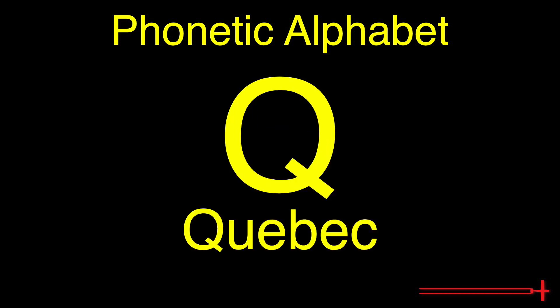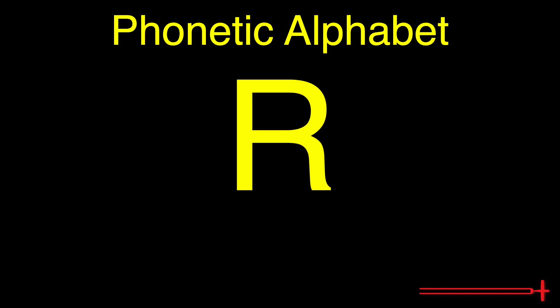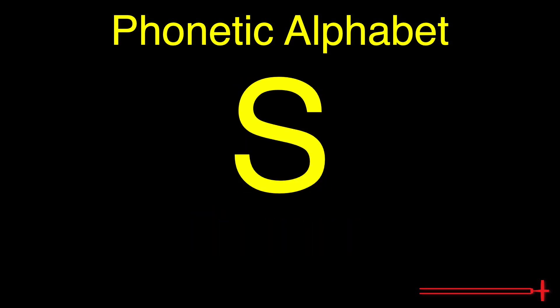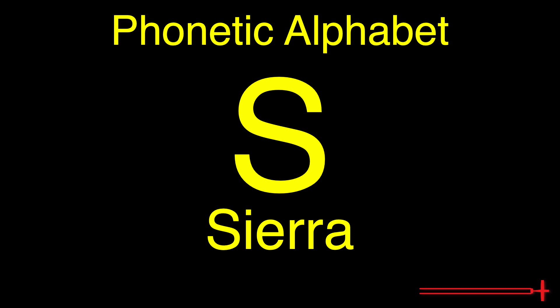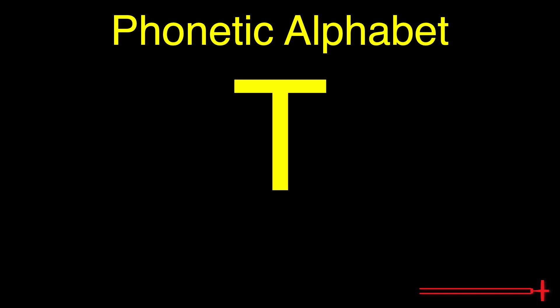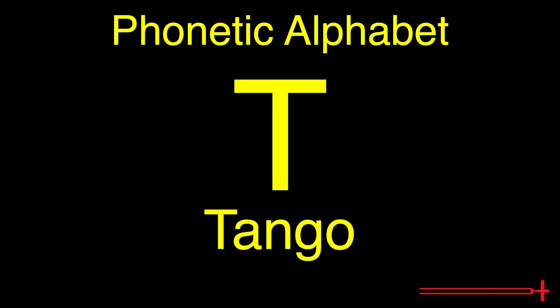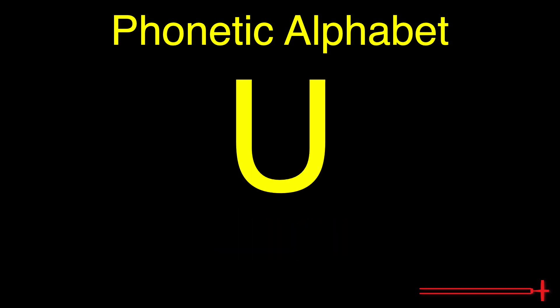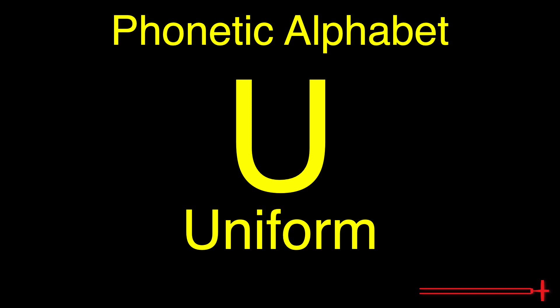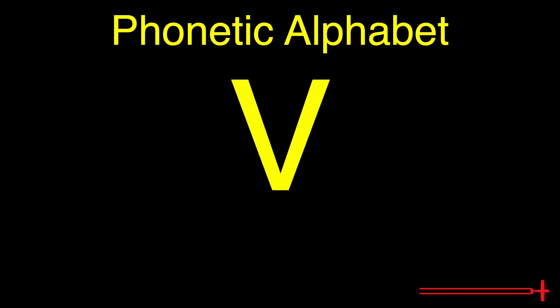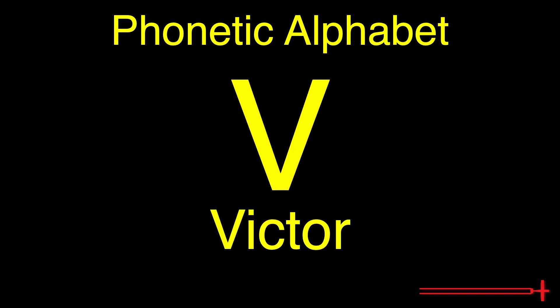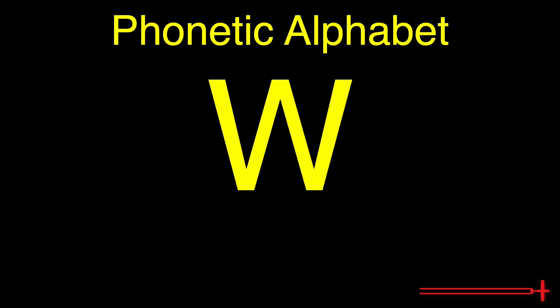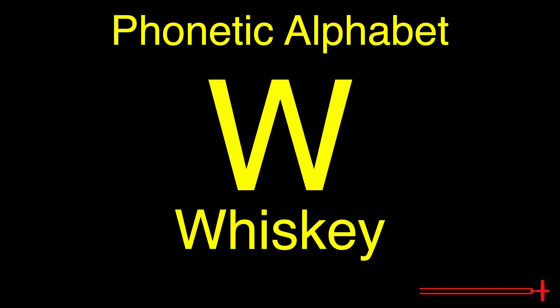Q, Quebec — sometimes pronounced 'K-beck' for some reason. R, Romeo. S, Sierra. T, Tango. U, Uniform. V, Victor. W, Whiskey.